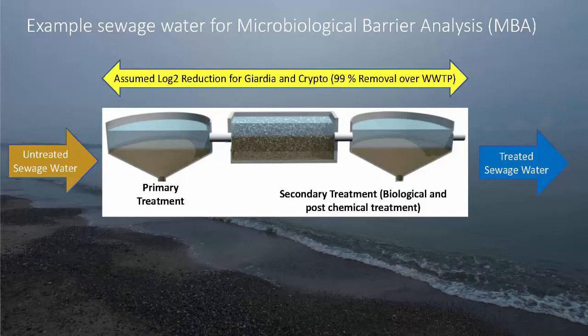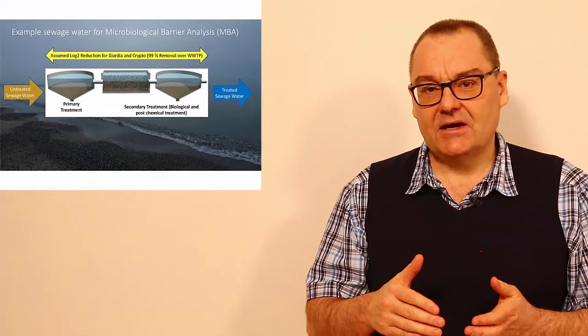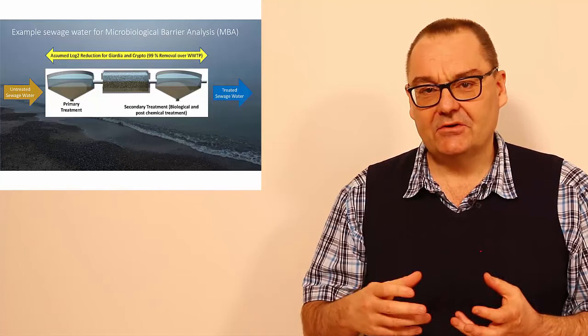Also I show you here in yellow the assumed log 2 reduction for parasites. There weren't too many figures on that, so I assumed this log 2 reduction in regards to parasites. With that, now let's look at the results of treatment over this type of plant and the results that we're going to use to put in the MBA.